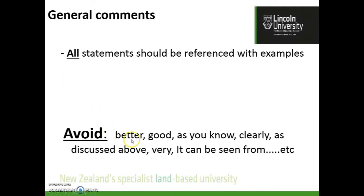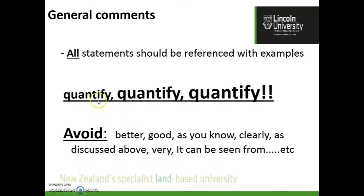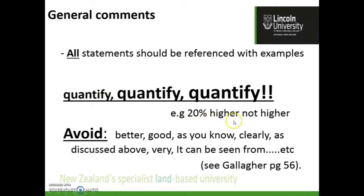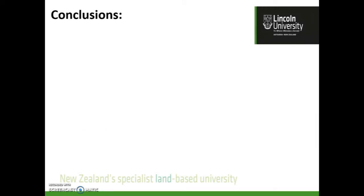Don't use words like 'better' — what does that actually mean? Don't use 'good,' 'clearly,' or 'as discussed.' These are not helpful. Make sure you quantify things — for example, '20% higher,' not just 'higher.' In literature and science we expect quantified explanations, not qualitative ones. Qualitative simply says things are different; quantitative says how big that difference is and whether it's real.